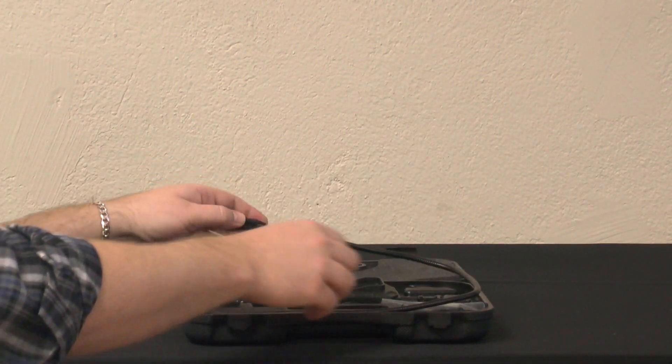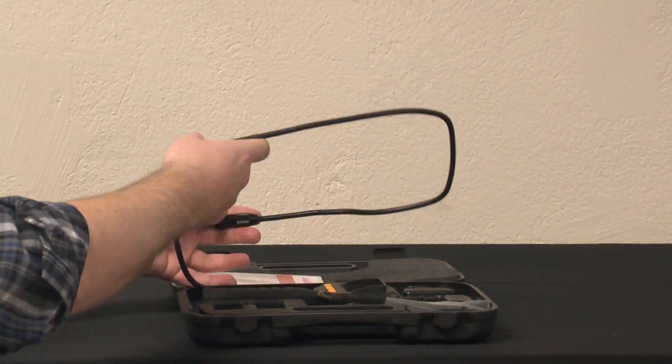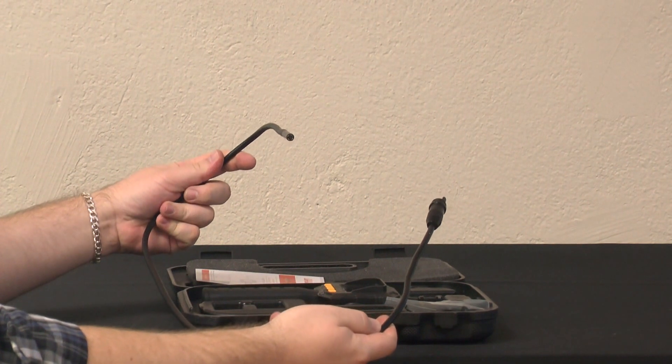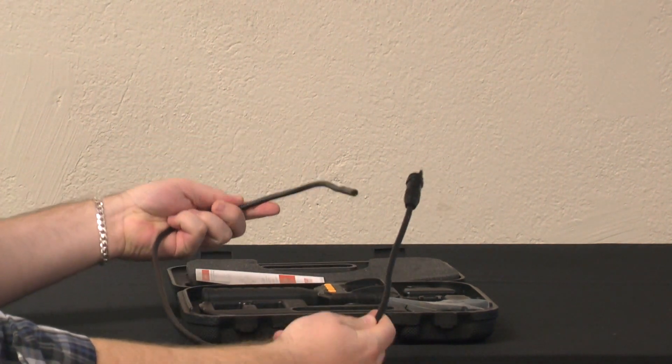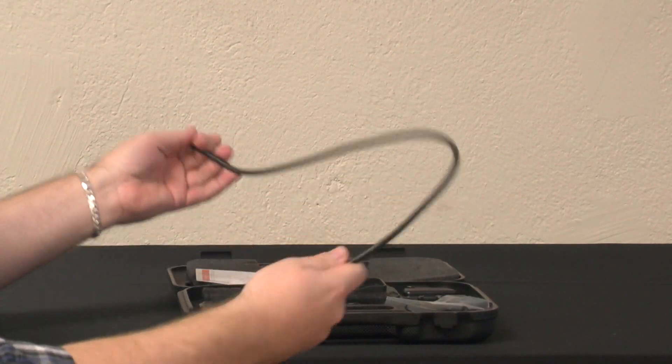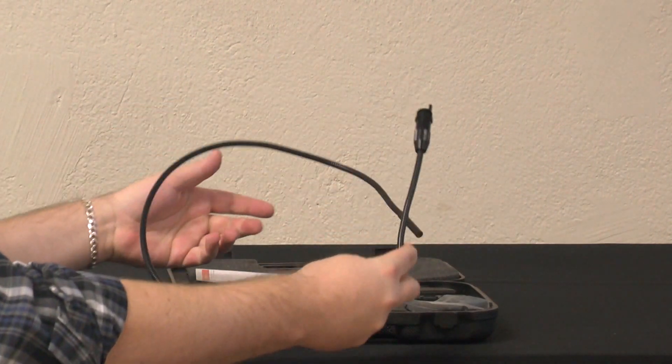Also inside the case, you have the IP67 rated camera and tube that connects to the main unit. It's very flexible. It's a stiff flexible. It's like a gooseneck, so you can put it into any position you want and it'll stay.